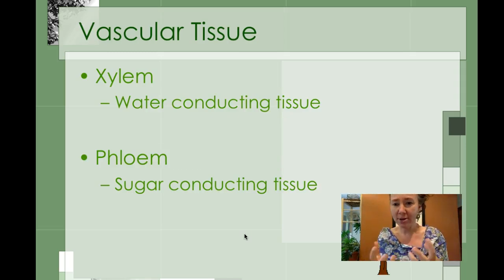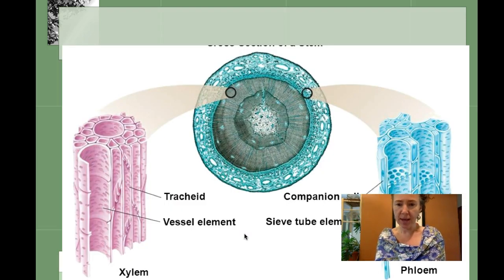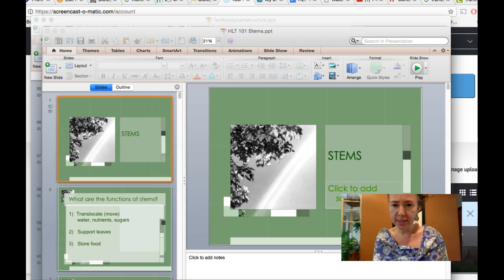When we talk about vascular tissue, remember we're talking primarily about the xylem which transports water and the phloem which transports that food, that sugar, that glucose.